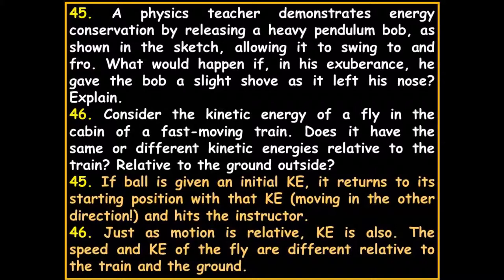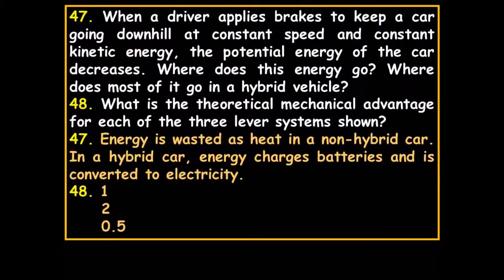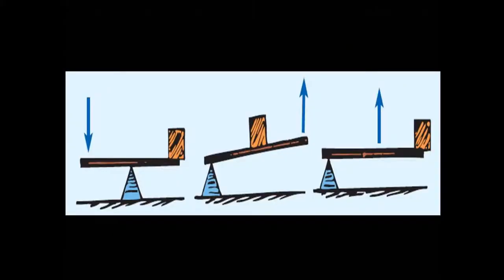Consider the kinetic energy of a fly in the cabin of a fast-moving train. Does it have the same or different kinetic energy relative to the train versus the ground outside? If the train is going 40 mph and the fly goes 2 mph, the fly is going 42 mph relative to the ground. Just as motion is relative, kinetic energy is also relative — the fly's speed and KE differ depending on the reference frame.